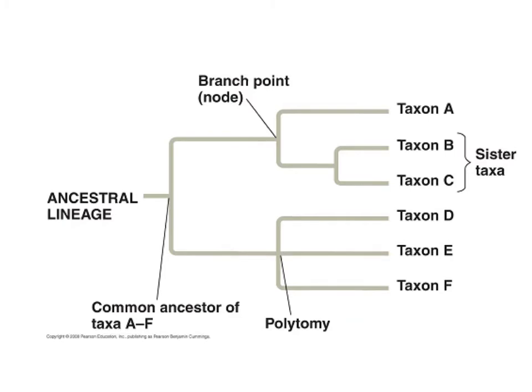We have vocabulary to cover: taxons are groups of species. Every node or branch point should branch into two. If there are more than two branches, that's called a polytomy — an unresolved divergence pattern. Polytomies are considered temporary in the scientific community, because in the future there will be enough evidence to narrow down the divergence more precisely.